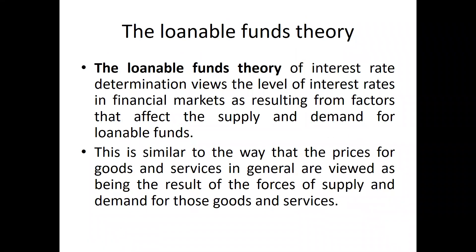Let us go into a more deeply analysis of how these things are happening — how this interest rate changes, why it's not stable. Can it just be fixed by the government at 10% or 12%? So, why does the interest rate change? What are the factors that drive the interest rate up and down? What are the main determinants of interest rate movements? There is a theory called the loanable fund theory. You might know this from your previous finance courses. This loanable fund theory of interest rate determination views the level of the interest rate in the financial market as a result of factors that affect supply and demand of loanable funds.